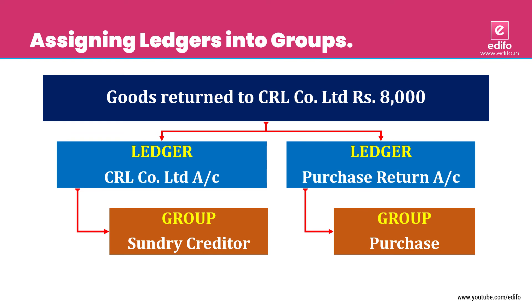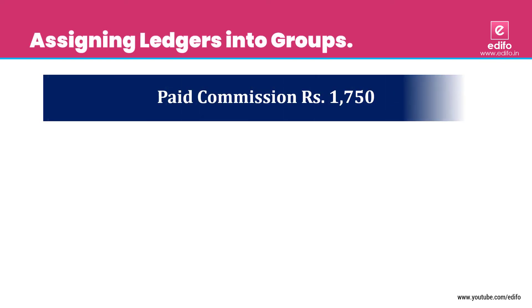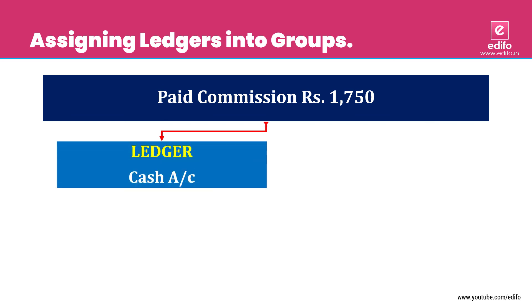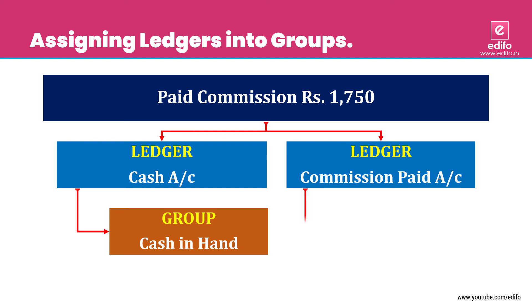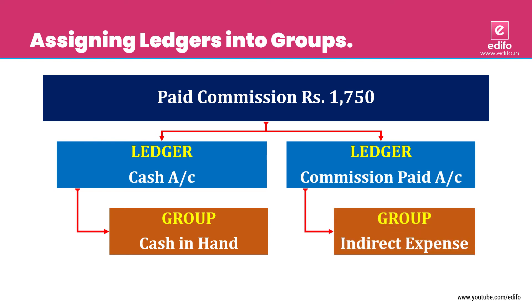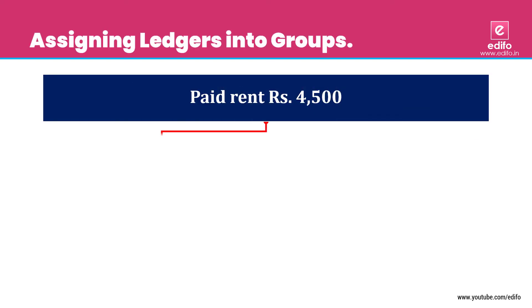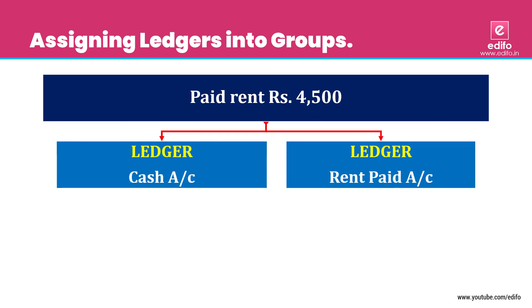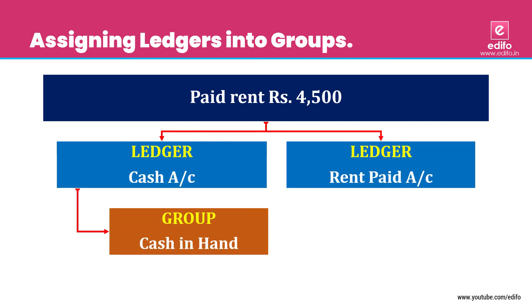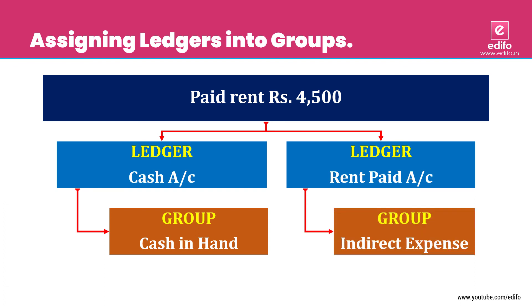Next transaction: paid commission. Two aspects — cash and commission paid. Cash belongs to 'Cash in Hand' and commission belongs to 'Indirect Expense'. Next: paid rent. Two aspects — cash and rent paid. Cash is 'Cash in Hand' and rent paid is 'Indirect Expense'.